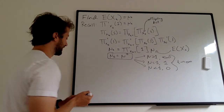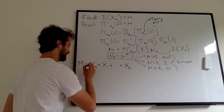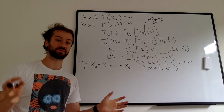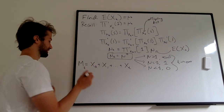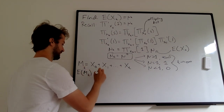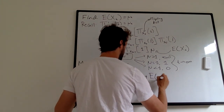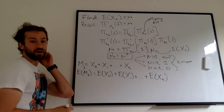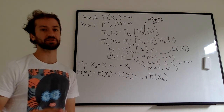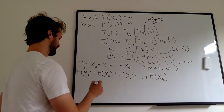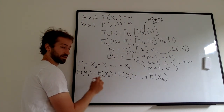We can also use this to calculate M sub t, defined as the total size of the population that has ever existed up to time t. Taking the expectation of M sub t, we just take the sum of the expectations of all the terms. These terms are very much not independent — they're very dependent — however, by linearity of expectation, it doesn't matter; we can split all the expectations. The expectation of X sub zero is one because we always start with one cell, the expectation of X sub one is mu, and so on up to mu to the t.